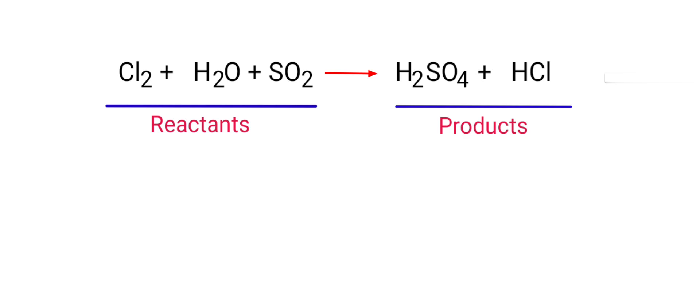In this equation, the reactants are chlorine, water, and sulfur dioxide, and the products are sulfuric acid and hydrogen chloride.